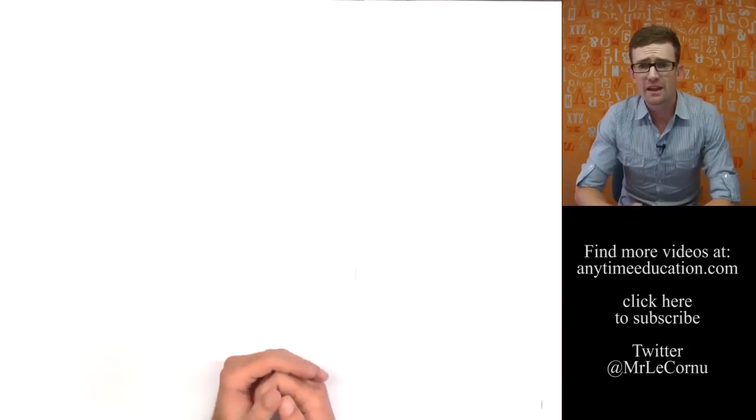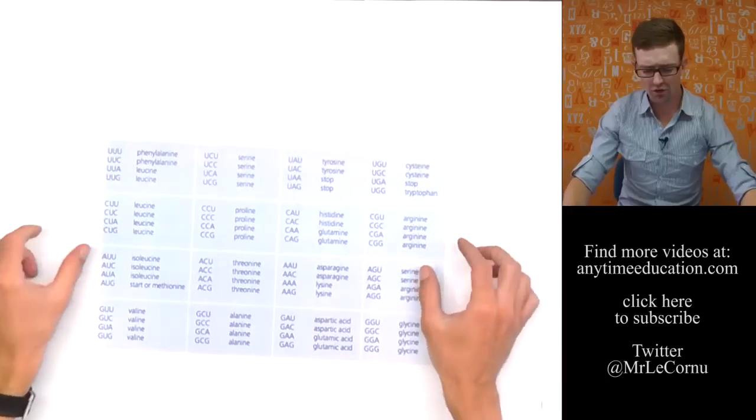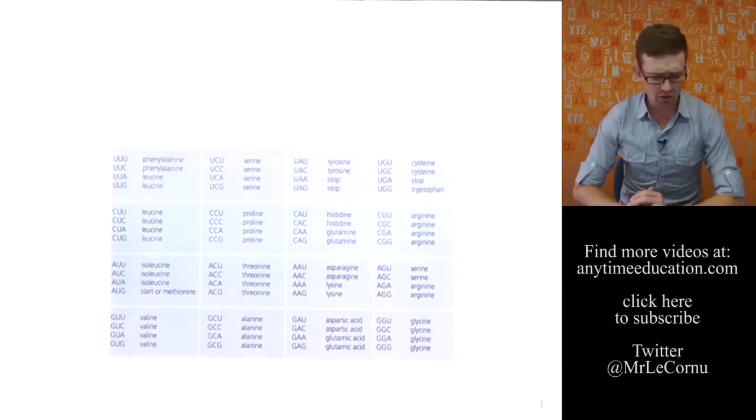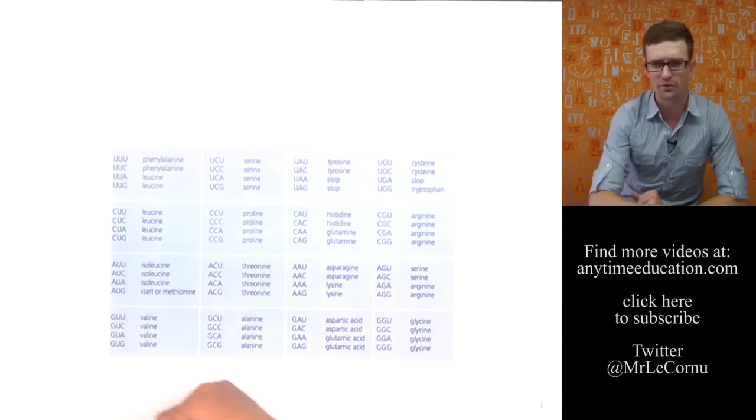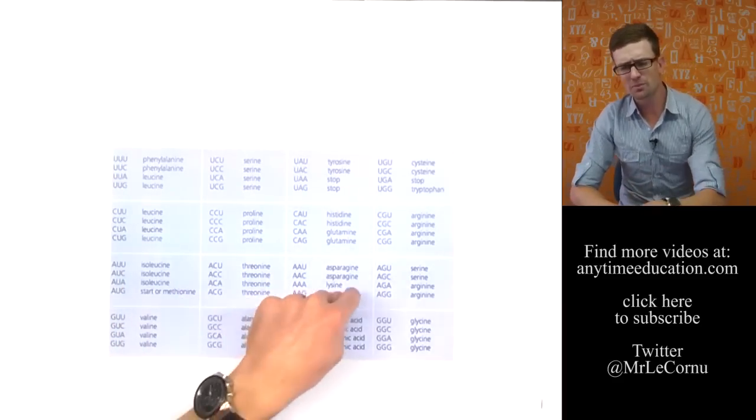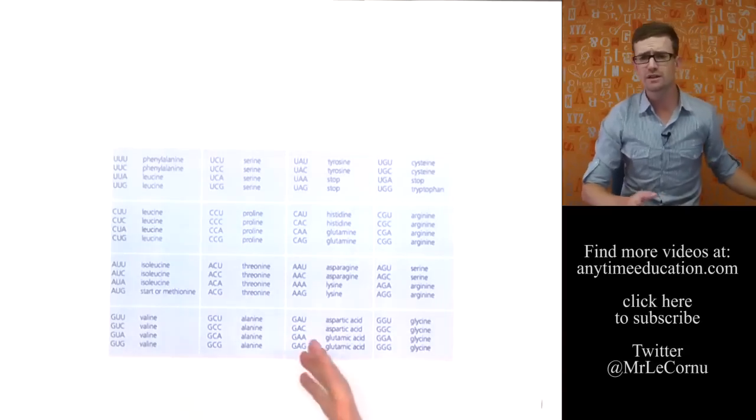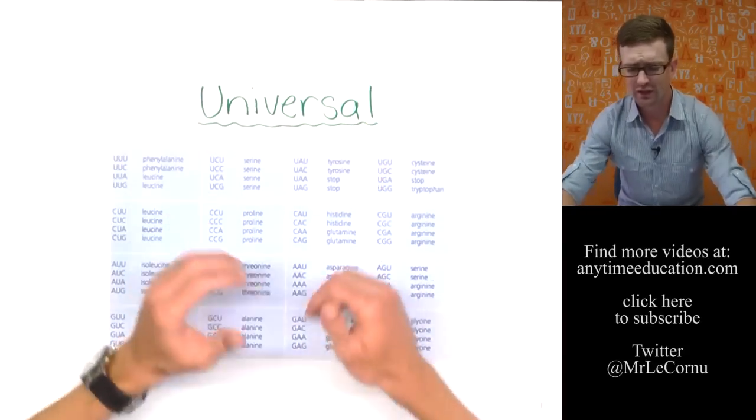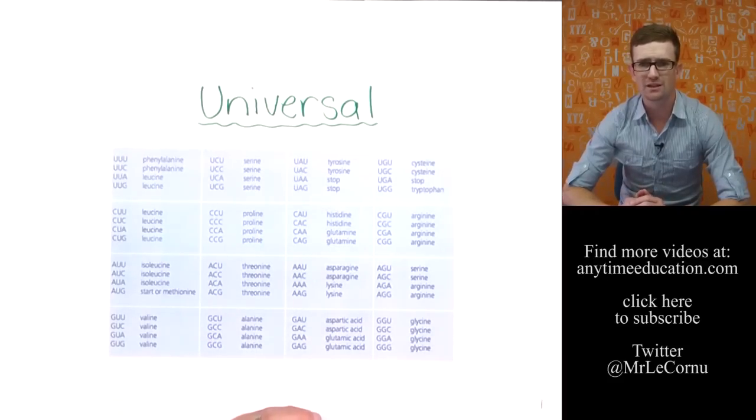And the other key bit of evidence is in the genetic code. We've looked at this before, but here's our genetic code again. It shows us all of the different codons, those groups of three bases, and which amino acids they code for in proteins. The reason the genetic code is a piece of evidence for evolution is that the genetic code is universal.